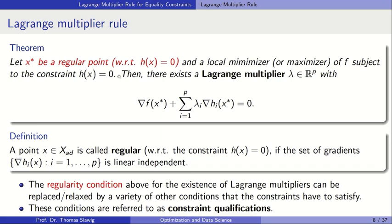A regular point is a point where the set of gradients of the constraints is linearly independent. We have p constraint functions whose gradients are vectors, and we investigate at a given point x whether this set is linearly independent. There are other assumptions that can be made — generally called constraint qualification — and these can replace or relax the regularity condition, but linear independence of constraint gradients is the most popular one found in the literature.